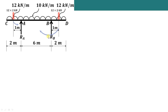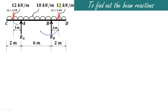We start with the calculation of beam reactions. Before finding the beam reactions, we convert the uniformly distributed loads into point loads. The UDL of 12 kN/m acting over 2 meters on the left overhang becomes 12×2, acting at the center, which is 1 meter from the end. Similarly, the right overhang UDL is also 12×2, acting at 1 meter from that end. The central UDL is 10×6.